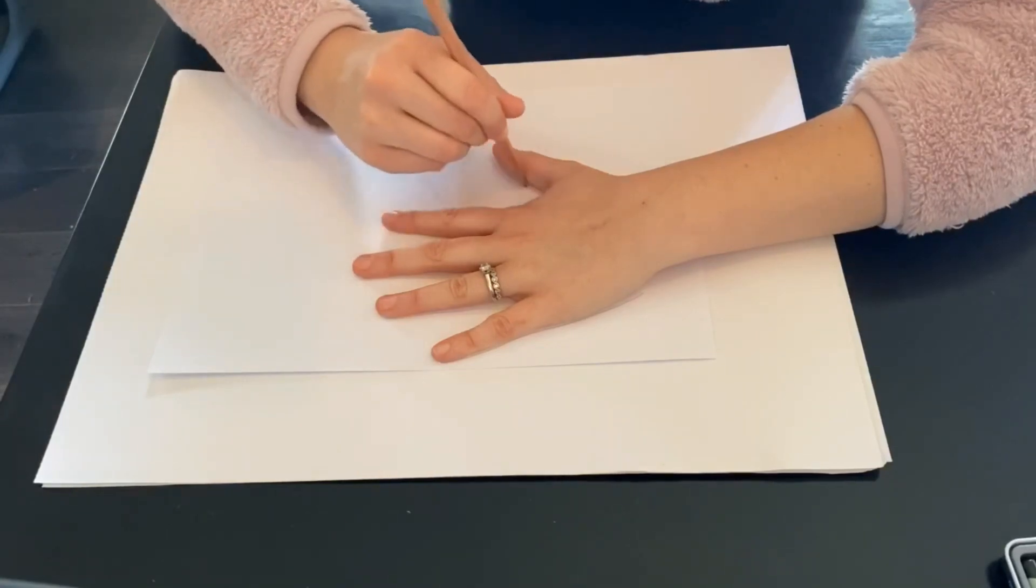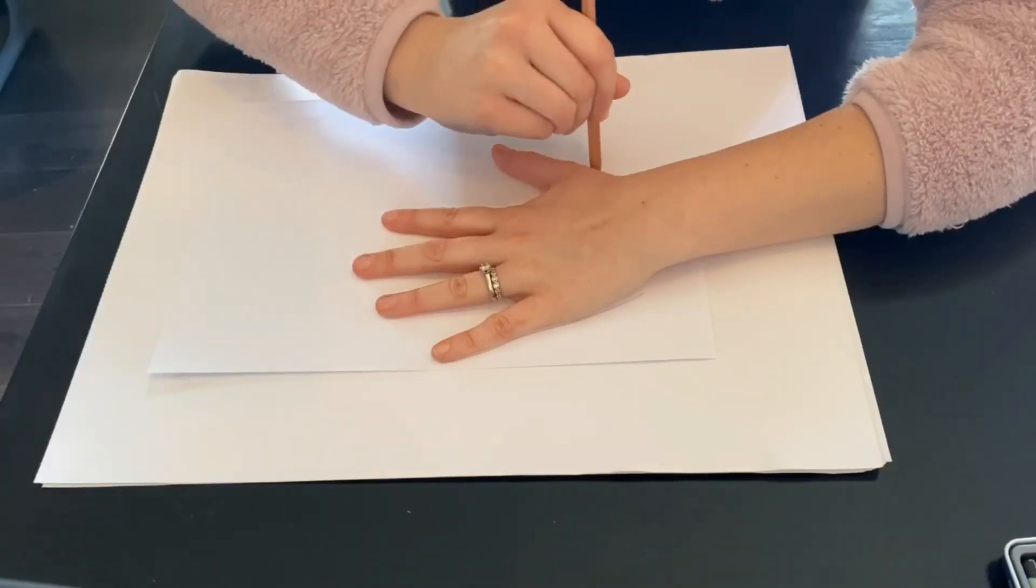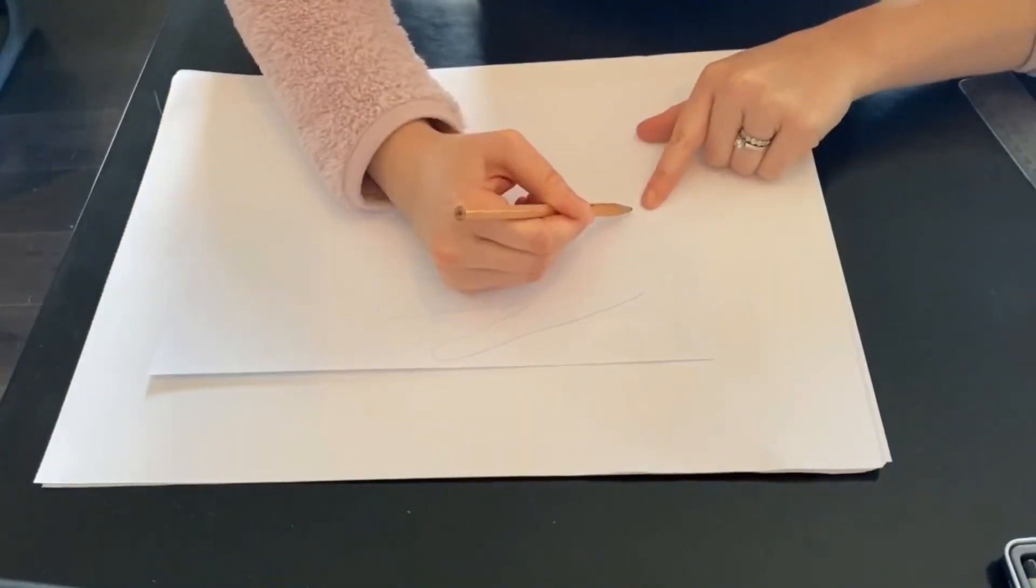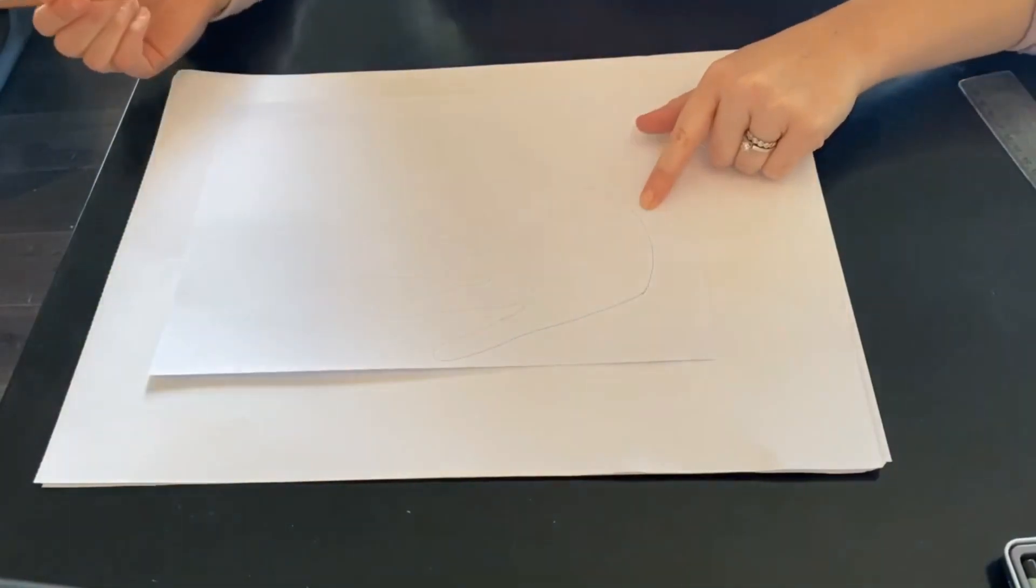Once your pencil returns back to your wrist, lift your hand up and then connect the two points with a curved line.